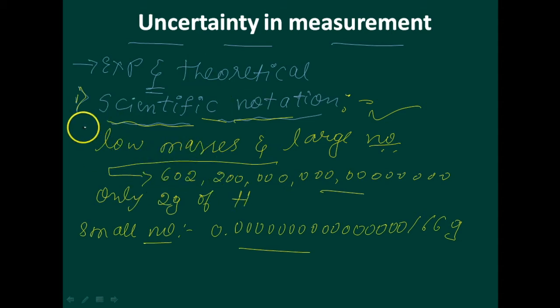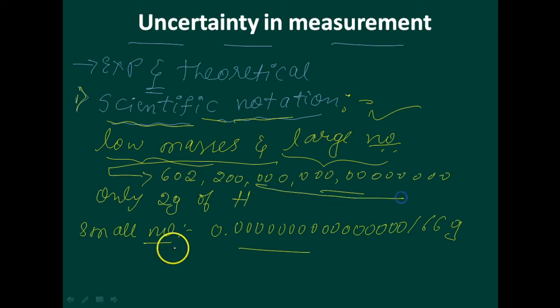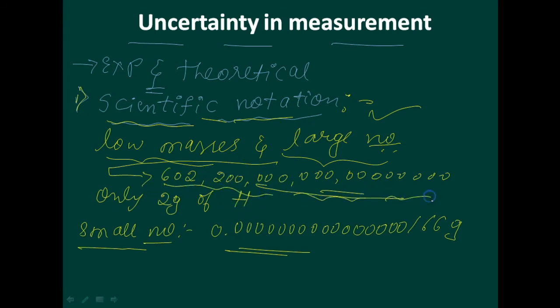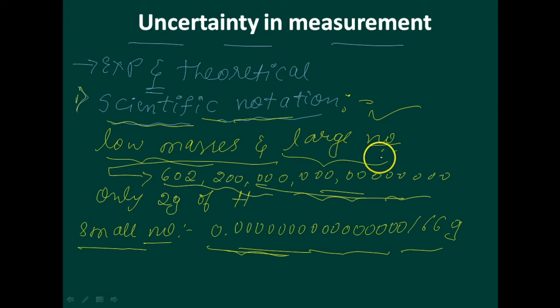In scientific notation, we face the problem of very large and very small numbers that are very difficult to read and use in calculations. To avoid this problem we use scientific notation, also called exponential notation.